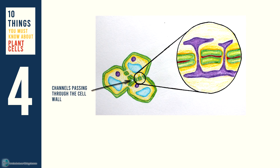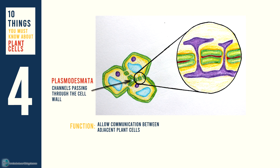There are channels passing through the cell wall called the plasmodesmata. They allow communication between adjacent plant cells. The endoplasmic reticulum of these plant cells is connected by a structure known as the desmotubule.